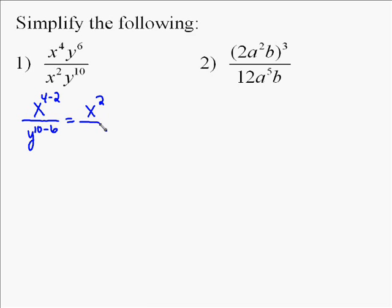And so on the x, the x to the 4th is on top and it's bigger than the x squared, so we subtract in the numerator. Whereas the y to the 10th is on bottom, and since the 10 is bigger than the 6th, we subtract in the denominator. The variable that has the highest power always stays in that place.